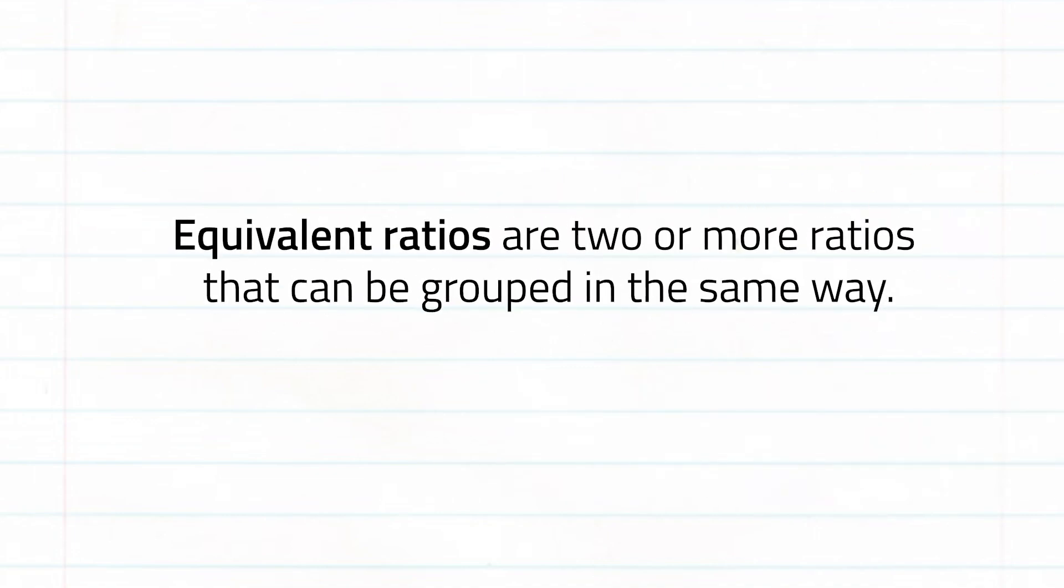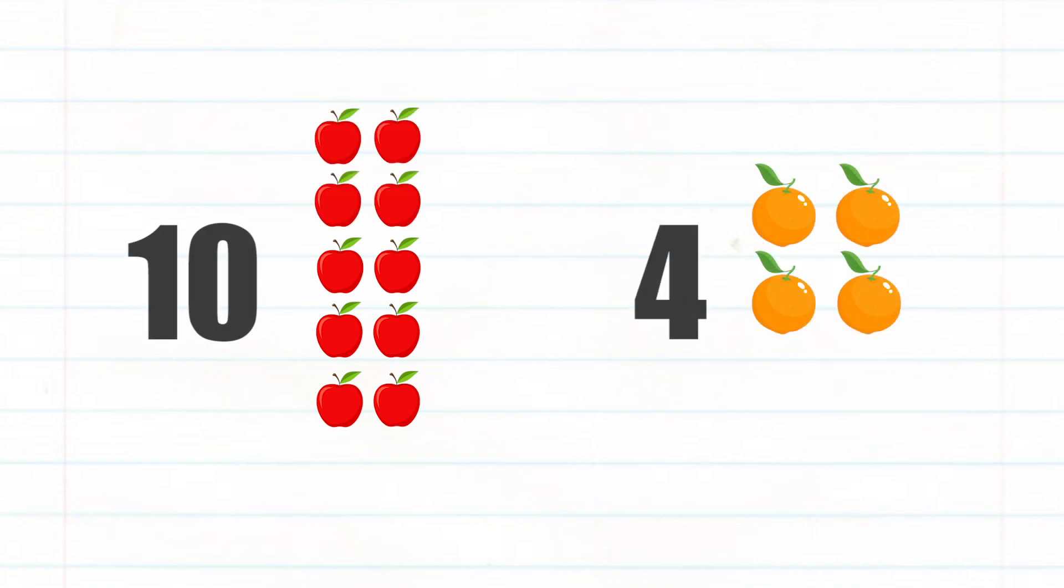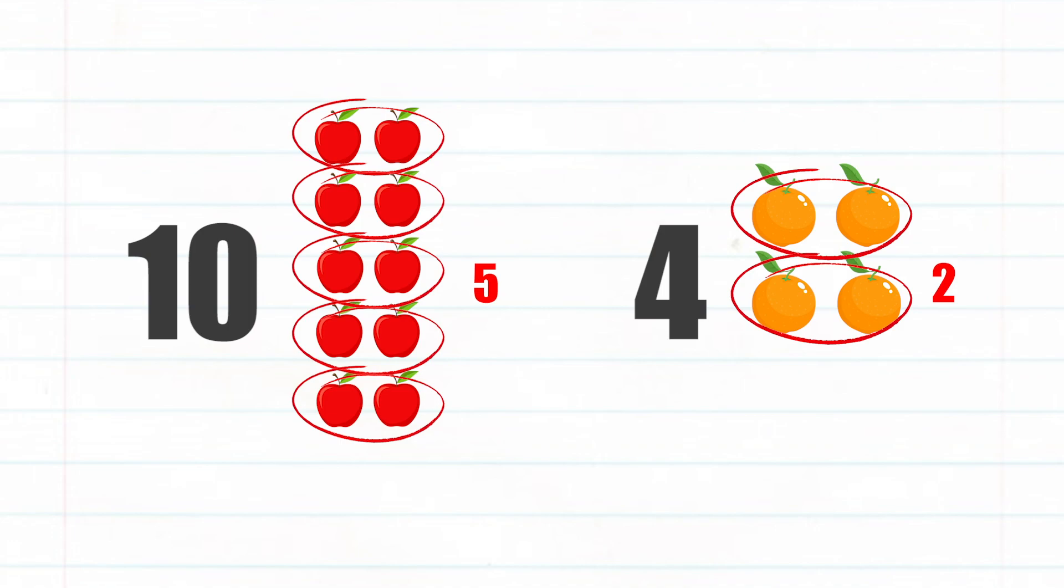Moving on, two ratios can be called equivalent if they can be grouped in the same way. Imagine a ratio of 10 apples to 4 oranges. If I grouped the fruits in pairs, I'd have 5 pairs of apples to 2 pairs of oranges. That means the ratio of 10 to 4 is equivalent to 5 to 2.